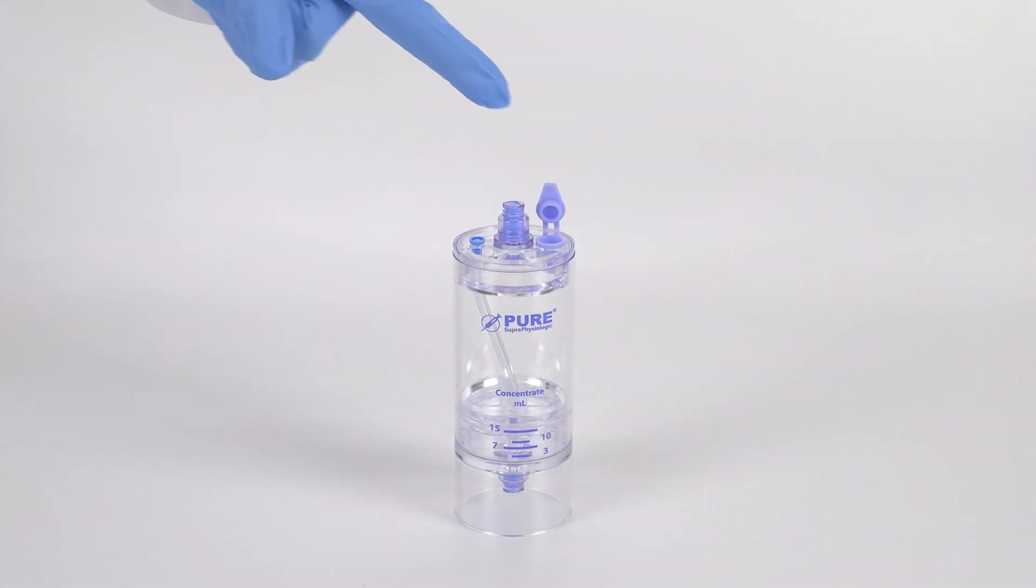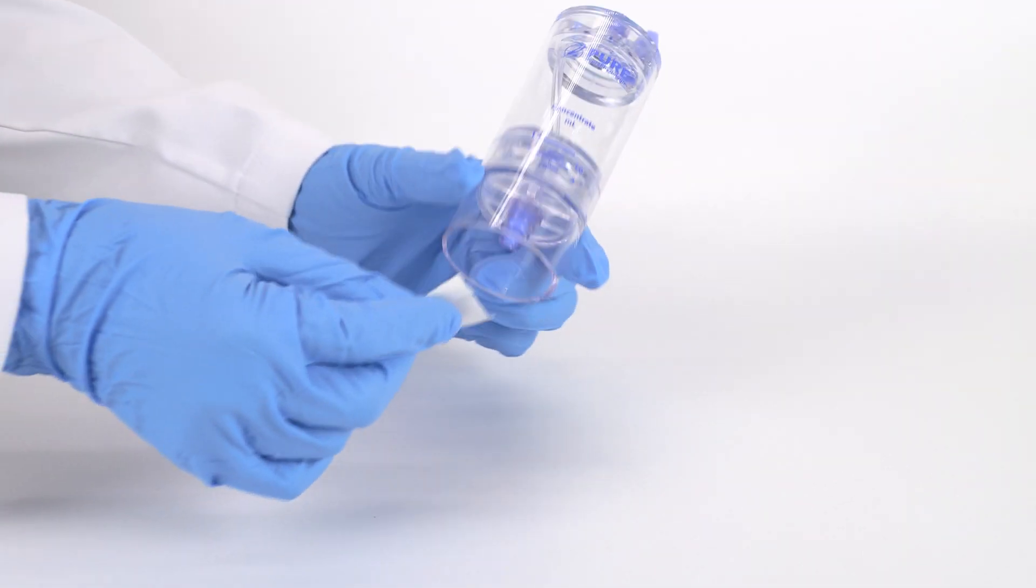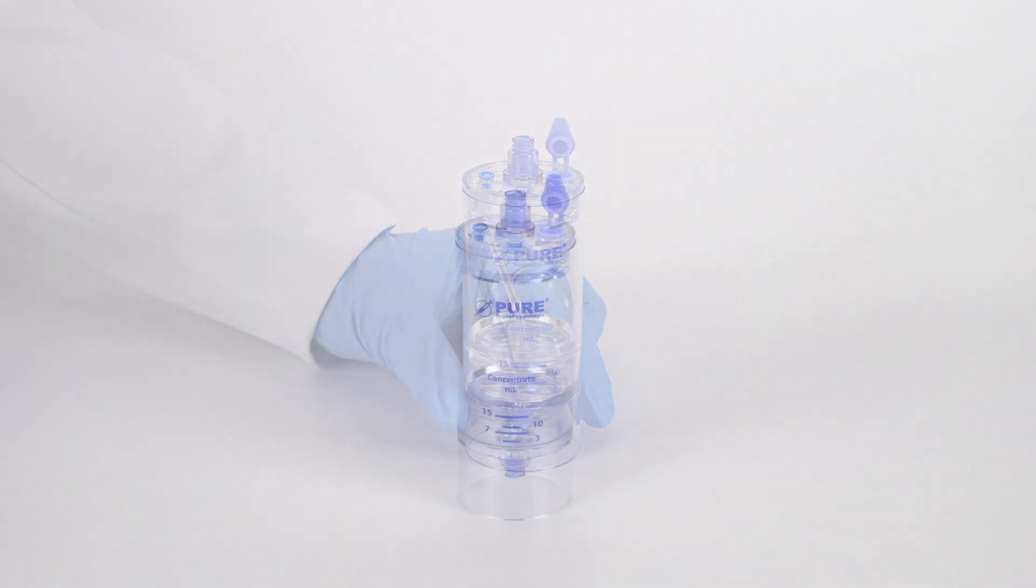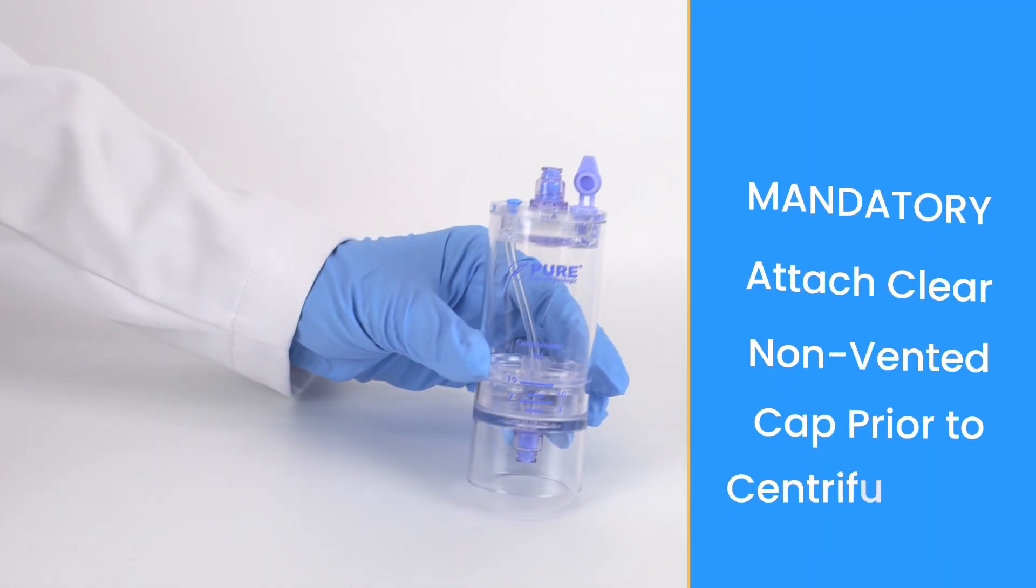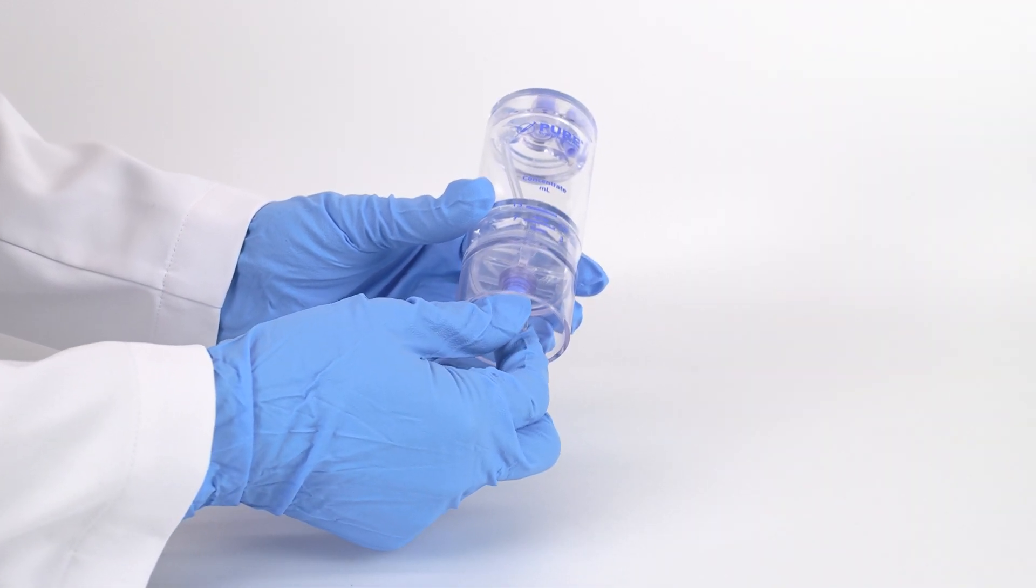To begin, make sure the vent lid is in the open position. Swab the needleless ports with sterile alcohol before and after accessing with a sterile syringe or cap. As a mandatory step, always attach the clear non-vented cap to the bottom port prior to centrifugation.